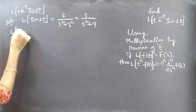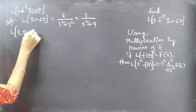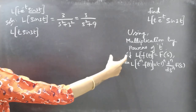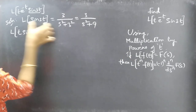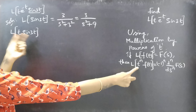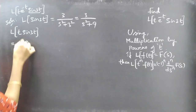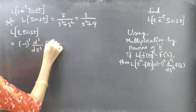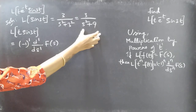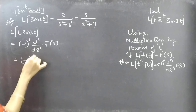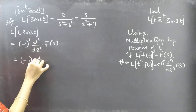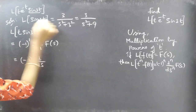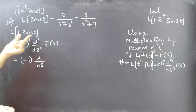Now we will find L of t·sin 3t using the multiplication by powers of t formula. This formula says that if L of f(t) equals F(s), then L of t^n·f(t) equals (-1)^n times d^n by ds^n of F(s). Here for n equal to 1, we get minus 1 times d by ds of F(s), where F(s) is 3 by s square plus 9.